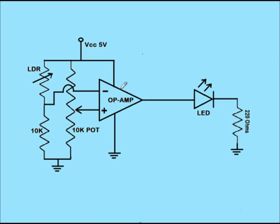The inverting terminal is connected to a voltage divider which has an LDR (light dependent resistor) and a fixed resistor. When the LDR is in light, its resistance drops. At that moment, the voltage at the inverting terminal is high. When the LDR is kept in dark, the voltage across the inverting terminal gets lower.